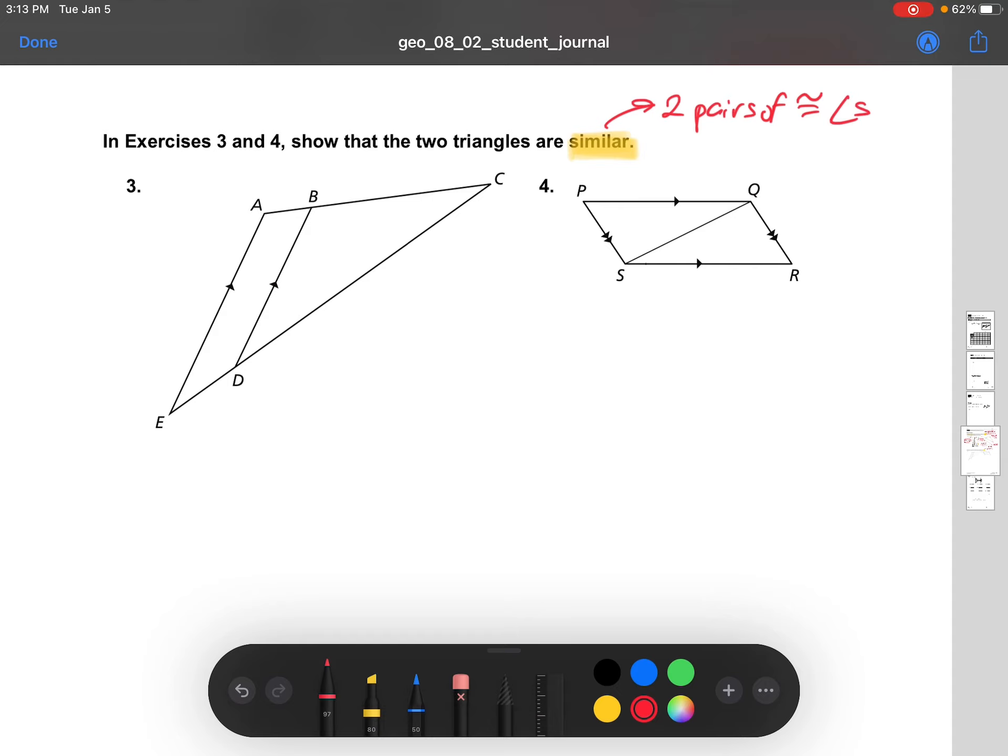Alright, so as we take a look at problem number 3, we see that there's a big triangle and a small triangle. And the small triangle is fitting very nicely within the big triangle. But they have one point in common, right? They both share this point C.